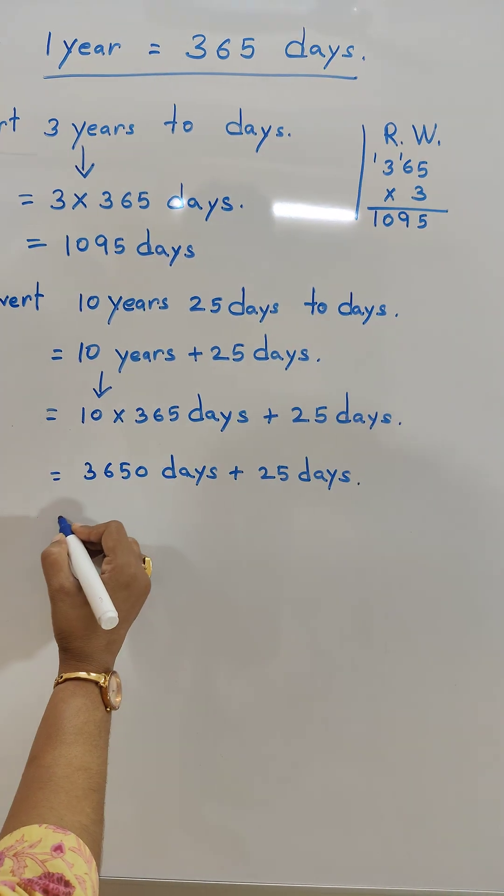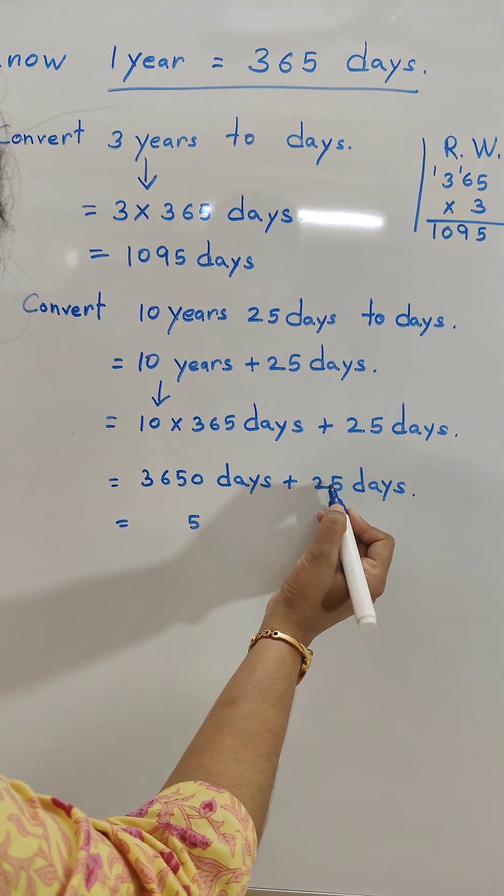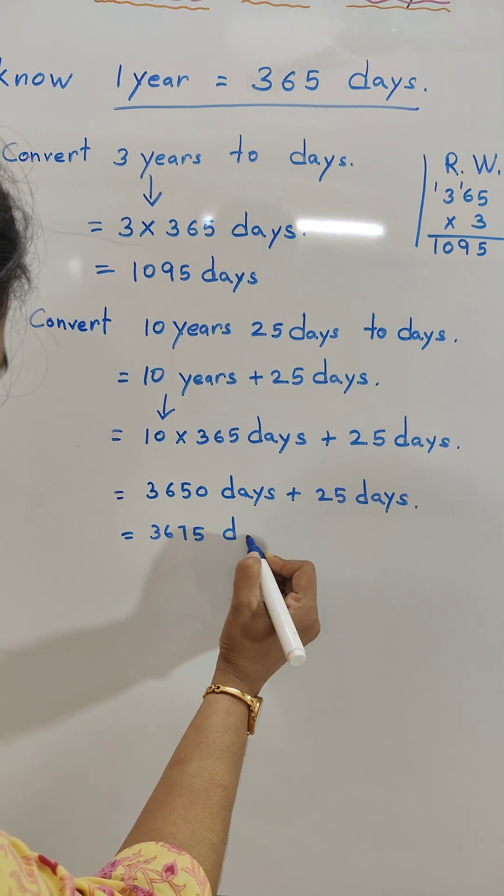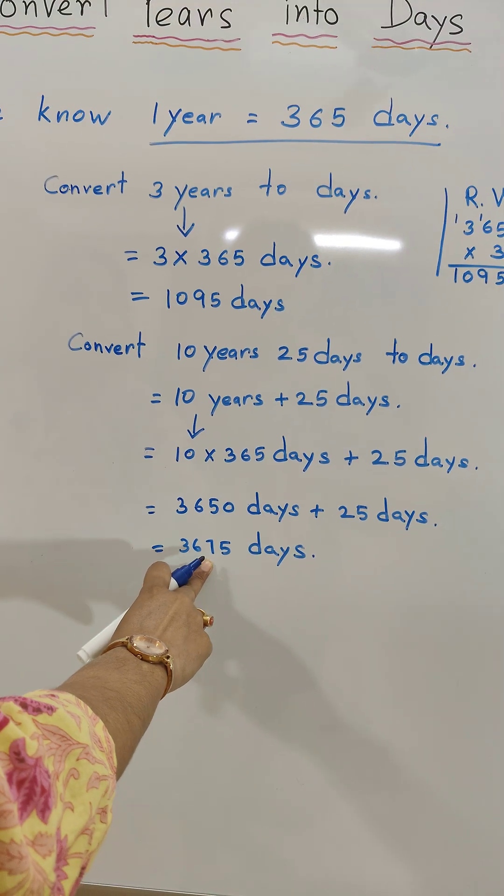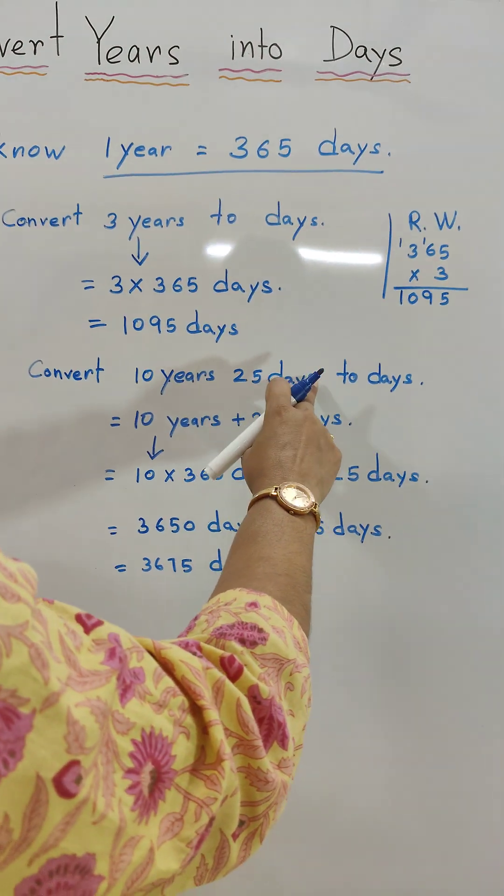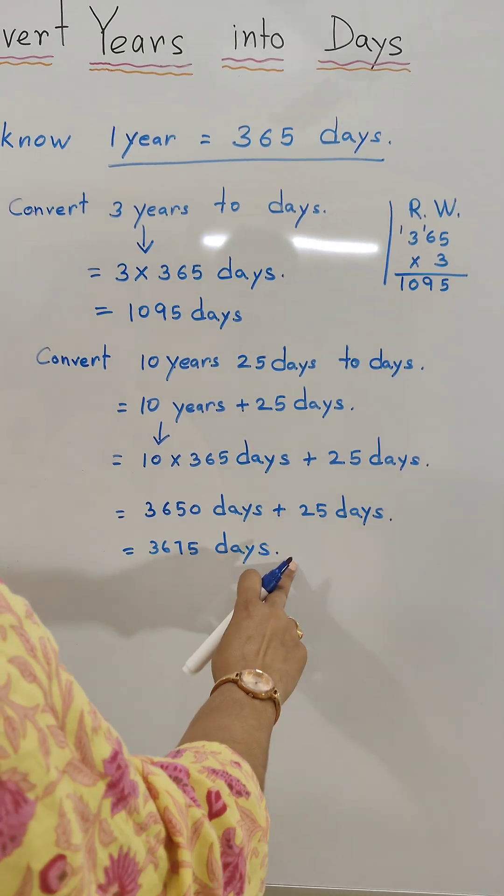Now we will do the addition. 5, 5 plus 2, 7, 3, 6 days. So our answer is 3675 days. So 10 years 25 days is equal to 3675 days.